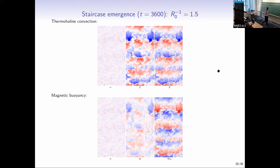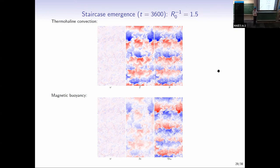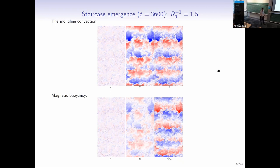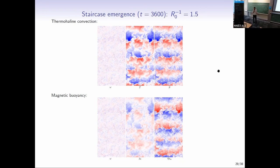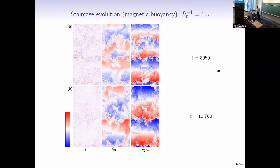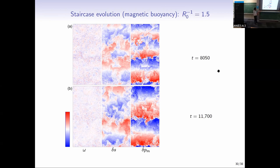What happens as time goes on is that these layers merge — this is always seen in such simulations. However many layers you start with, the long-term evolution is just layer merger until in the end you're left with one step. That's not what happens in the oceans, where observed layers appear very robust and don't change much. So something is missing from these simulations — they never pick out a preferred scale. Further on you can see merger has occurred; the layers are very turbulent but layers nonetheless, and they continue to merge.